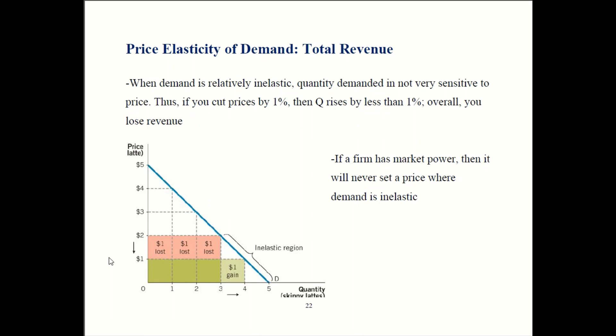So recall from chapter three, we said market power was the firm's ability to influence price. So a firm like a monopoly would never want to make this happen. Now, some firms in very competitive industries have little or no influence over price. So they'd be forced to do this anyways. But if you have market power, if you can control a price, you would not want to cut prices when demand is inelastic.